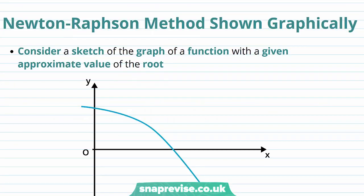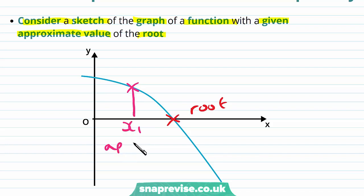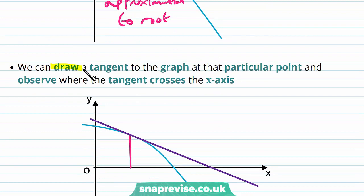So let's show the Newton-Raphson method graphically. Consider a sketch of the graph of a function with a given approximate value of the root. Let's say here we have our root, and we have some value here, which gives us an approximate value x1 to the root. We can draw a tangent to the graph at that particular point and observe where the tangent crosses the x-axis.